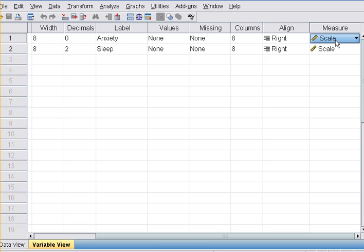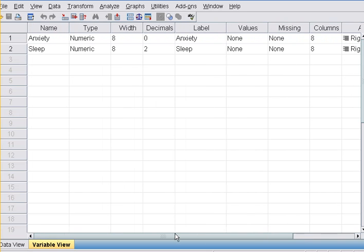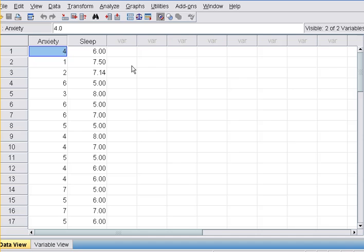Height, weight, how often do you brush your teeth - these are examples of scale data, numbers that you could add and subtract and work with. So anxiety and sleep, they're both scale. Okay, then let's actually go and analyze this data.